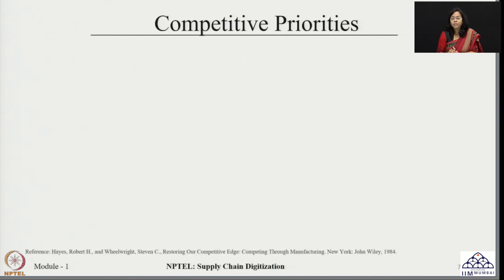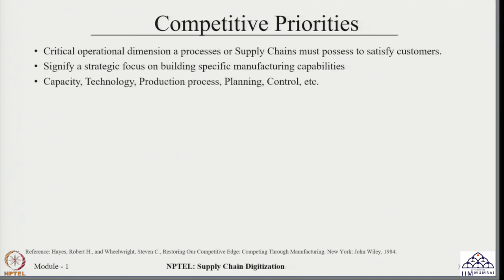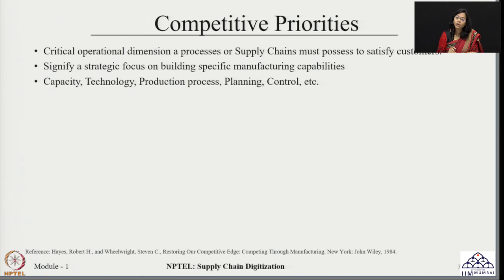Based on our discussion, we can see that companies have different competitive priorities. Competitive priorities are the critical operational dimensions that processes or supply chains must possess in order to satisfy customers — they signify a strategic focus on building specific manufacturing capabilities. Many decisions related to capacity, technology, production process, planning, control, etc., are dependent on the type of competitive priorities decided by the company. It is important to understand that not all competitive priorities need to be selected — companies can select those that are most important.